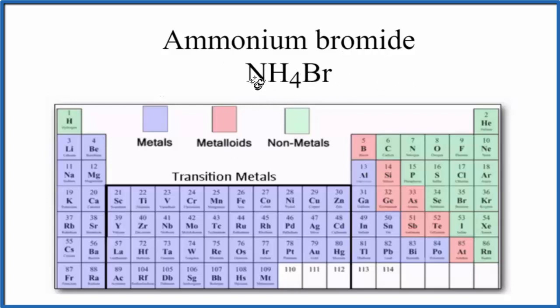So when you look at it, you see you have nitrogen here, that's a non-metal. Hydrogen over here, that's also a non-metal. And then bromine, that's a non-metal as well.